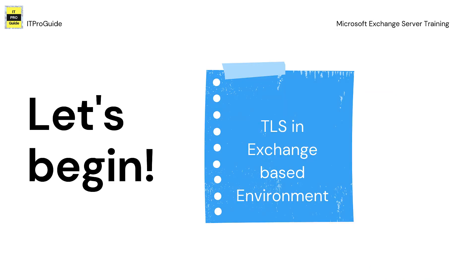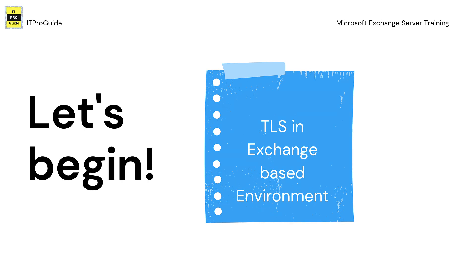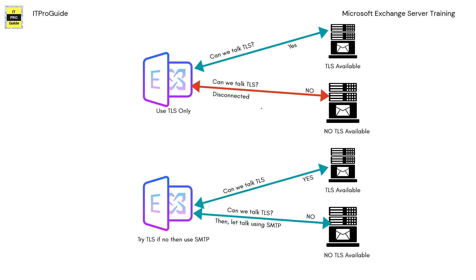Now it is time to start with TLS in an Exchange-based environment. Not all email servers are the same — some may have the capability to encrypt their communication, some may not. An Exchange Server should be configured to communicate with all parties in general. For example, a Gmail server may provide an option to communicate over TLS, but at the same time one of your customers might have a small mail server that doesn't have TLS capability.